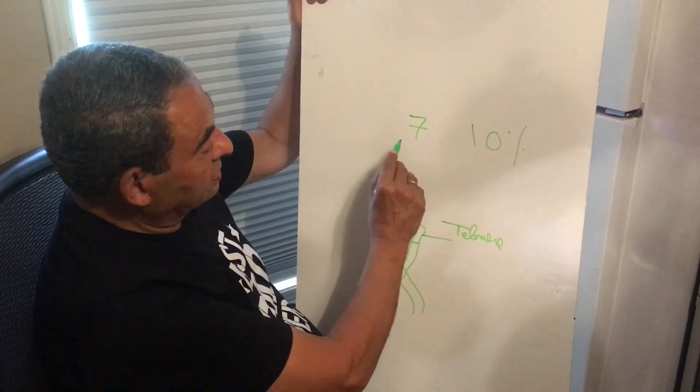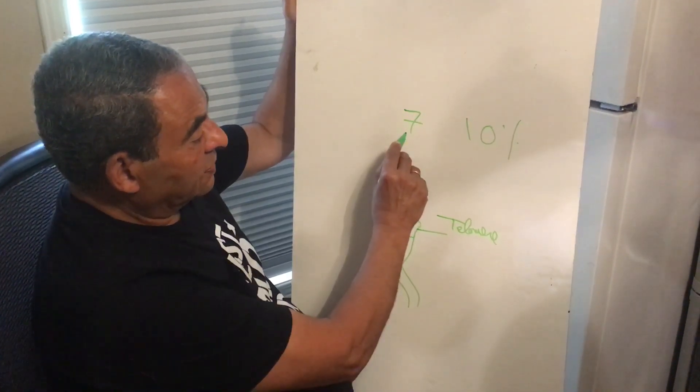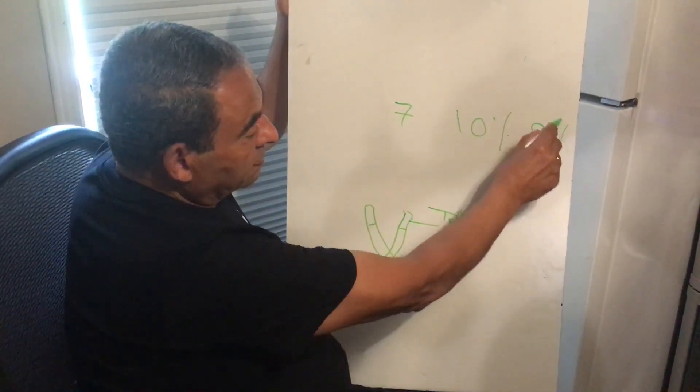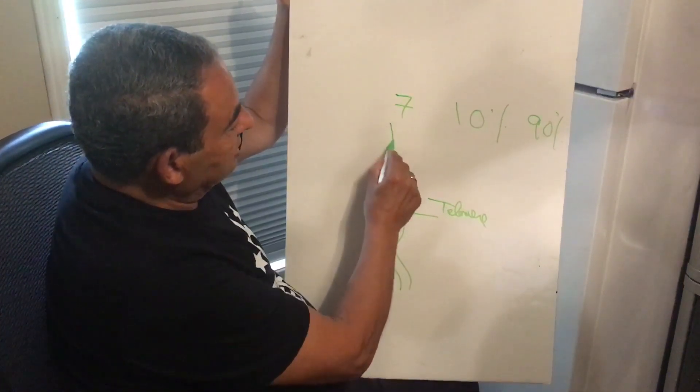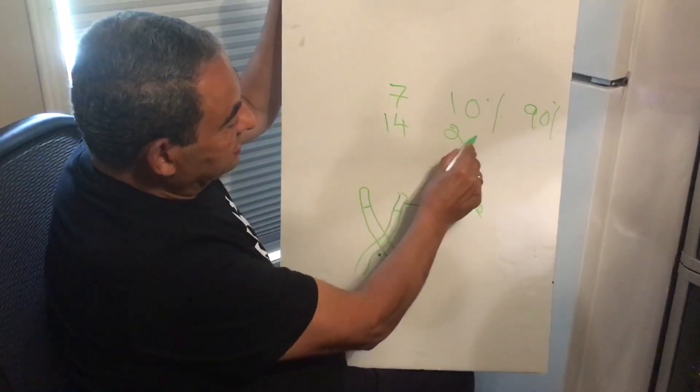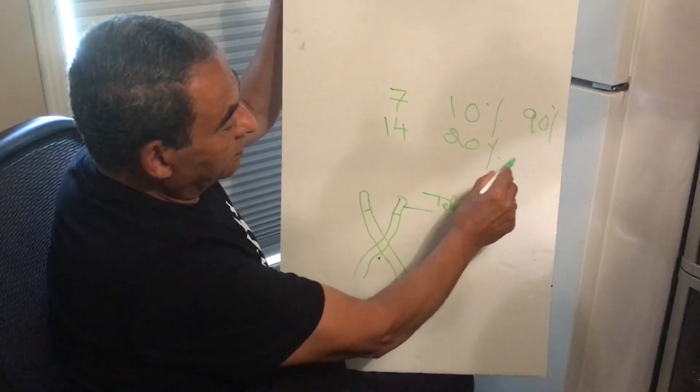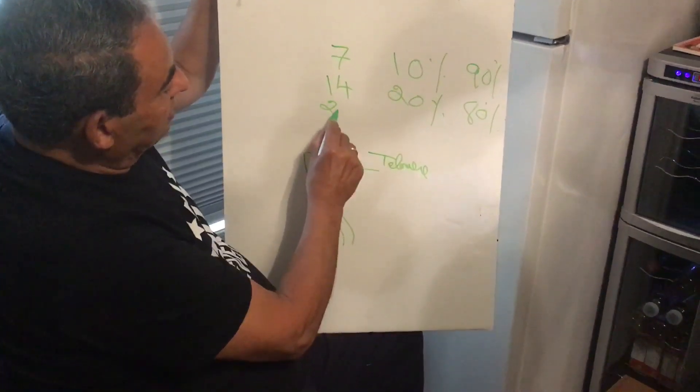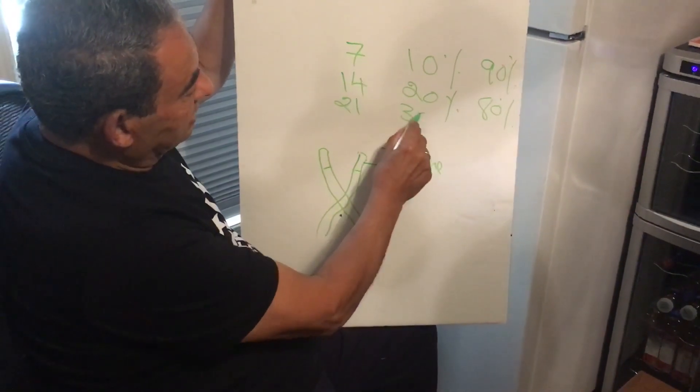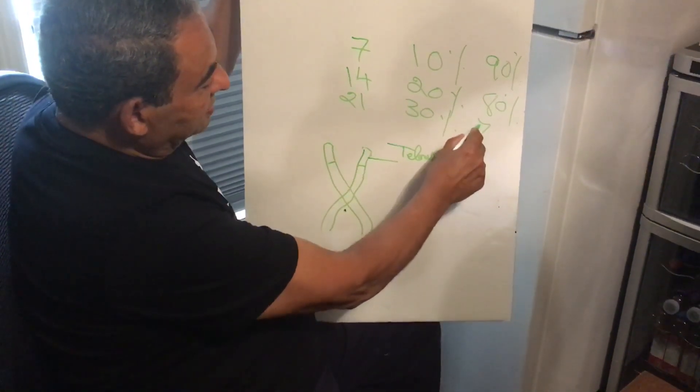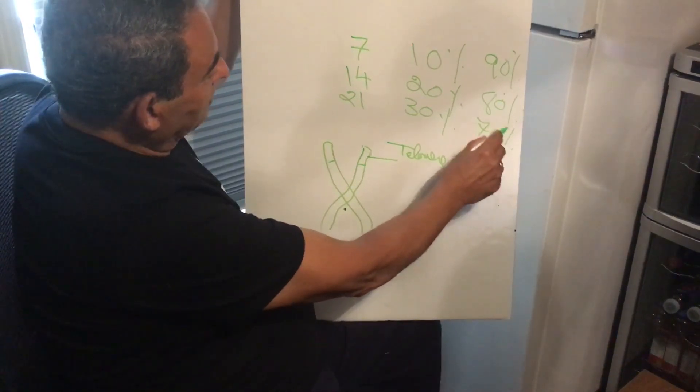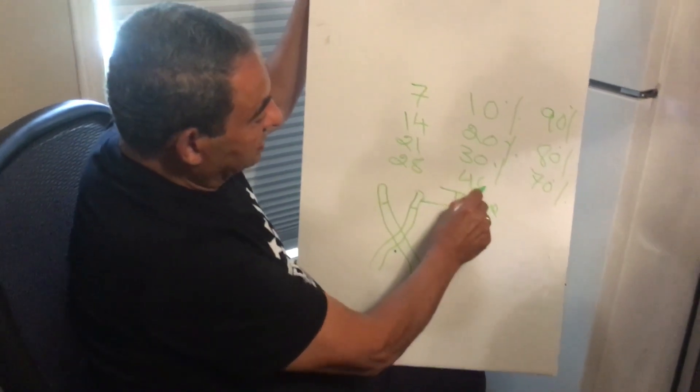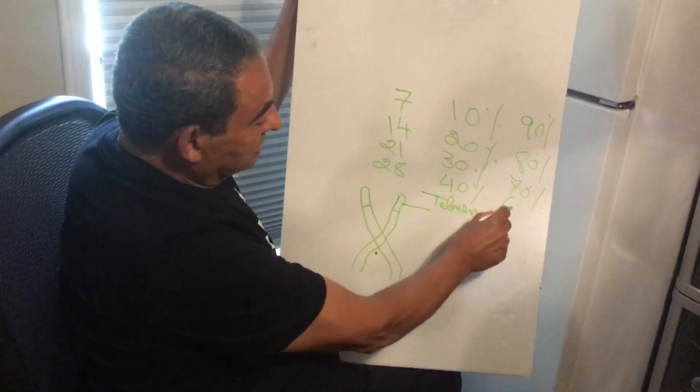When you are seven years old, you have ten percent depleted and ninety percent left. At fourteen years, you have twenty percent depleted and eighty percent left. At twenty-one, you have thirty percent depleted and seventy percent left. At twenty-eight, you have forty percent depleted and sixty percent left.